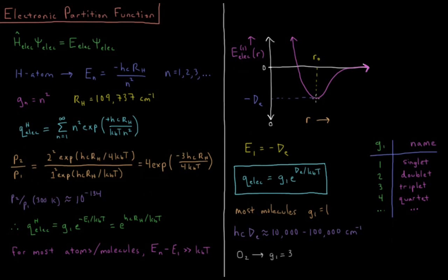Notable exceptions include things like O2. O2 is a triplet, it has unpaired electrons. So just pay attention for the molecule that you're given that you don't get tricked for whatever the ground state degeneracy is there.